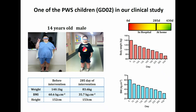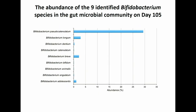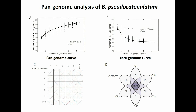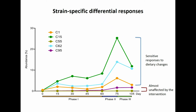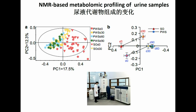Looking at this particular boy, in the first 105 days with multiple time points, at the genus level you see a lot of variation but a steady increase of Bifidobacterium. At the species level, nine species were identified, but only Bifidobacterium pseudocatenulatum showed a substantial increase. We isolated five strains of this species from a single sample — they share 1,520 genes in their core genome — but during the first 105 days, they showed different responses to the same dietary intervention. One of the strains can actually be used as a probiotic to alleviate high-fat diet-induced obesity in mice.